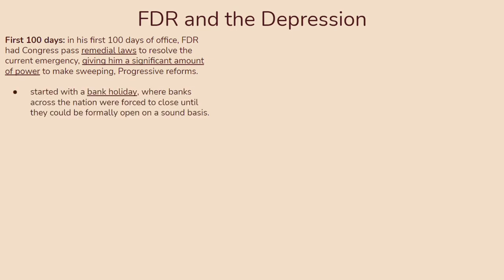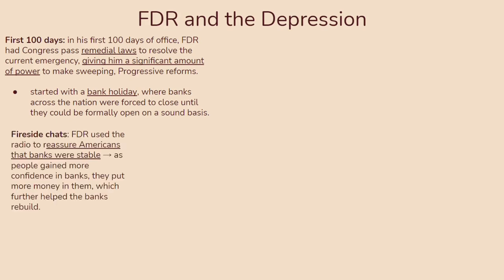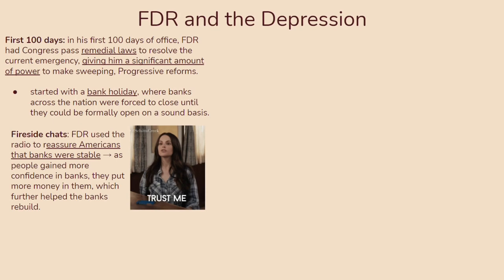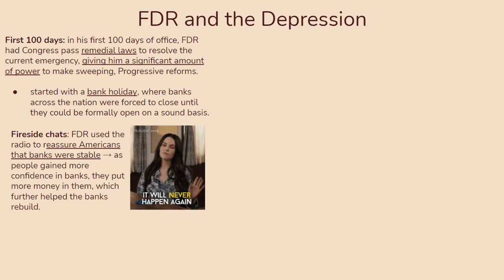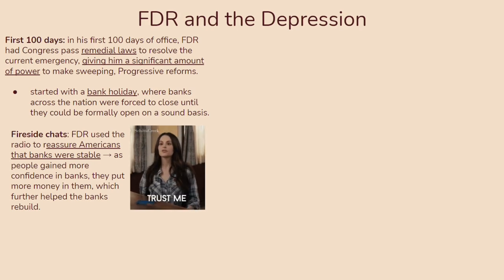As soon as he became president, FDR started with a bank holiday, where banks across the nation were forced to close until they could be formally reopened on a sound basis. FDR further reassured the American public with his fireside chats — he talked to them through the radio and ensured that banks would only open when they were stable. The fireside chats were a way for people to gain more confidence in banks, which led them to put money back in, and then further helped rebuild the banks. Banks had to provide some guarantee of stability, people would invest money, and then they would further stabilize.